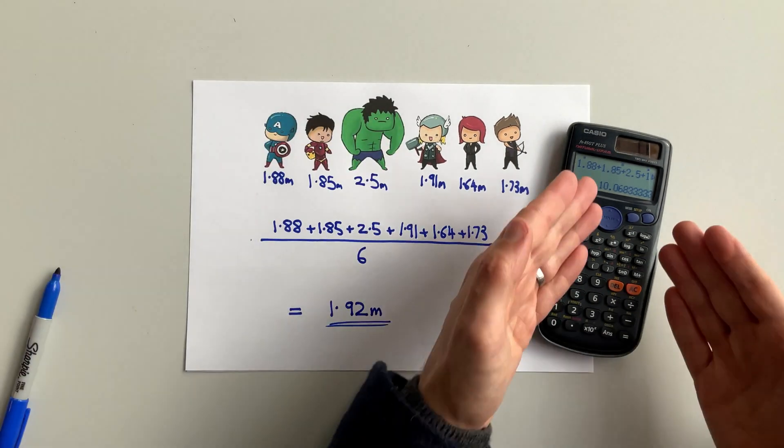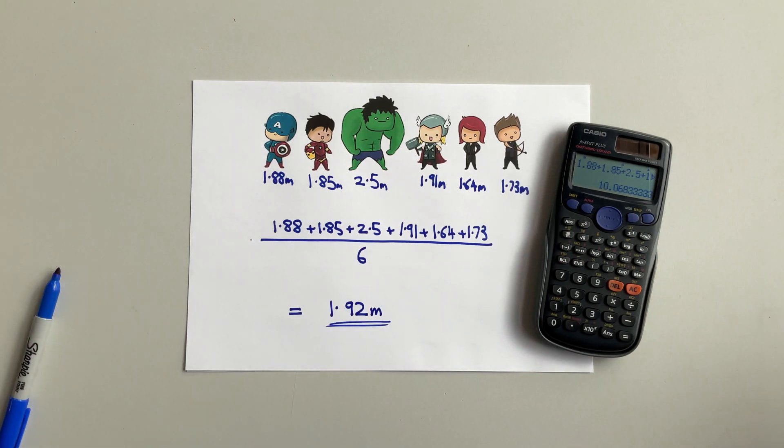Now, none of the Avengers are 10 meters tall, so the mean can't be this value. So to avoid this mistake, always push equals before you divide by how many numbers there are.